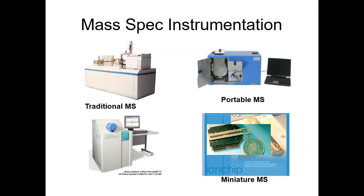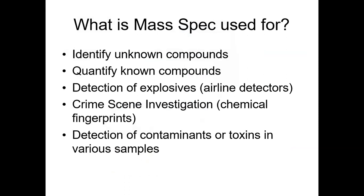We use mass spec to identify unknowns, to quantify known compounds, for explosive detection as with the airlines, and for crime scene investigation as chemical fingerprints. When you watch NCIS or any of those crime shows and you see a person in a white lab coat hunched over an instrument with spectra on the screen, more than likely they're doing mass spec on some chemical found at a crime scene. You can also use it to detect contaminants or toxins in samples - it's very accurate for detecting molecular weight.